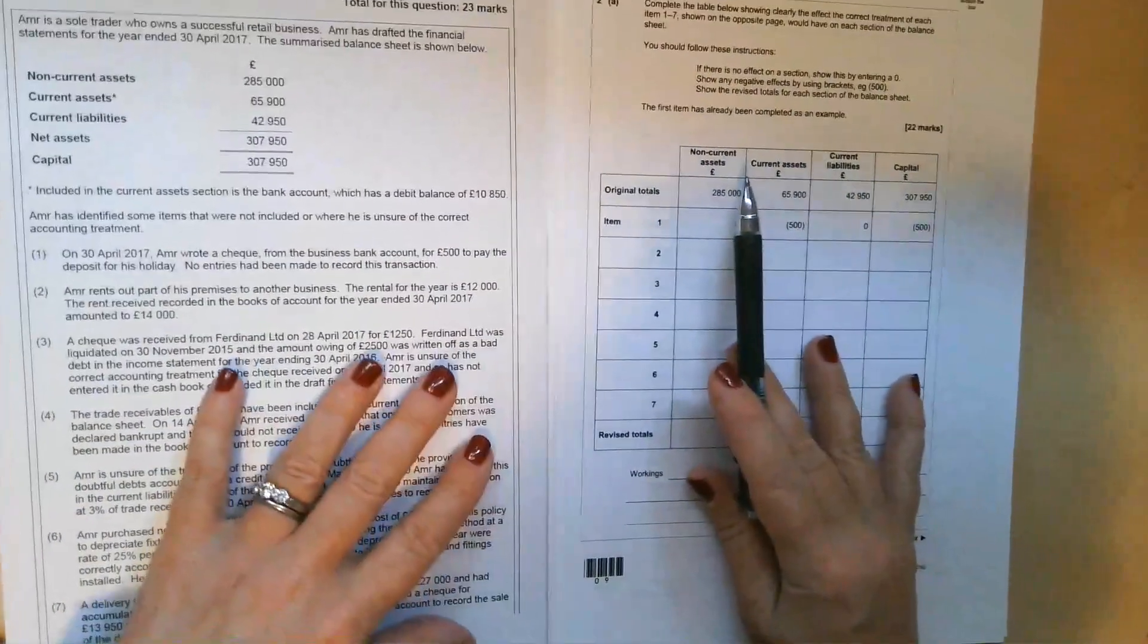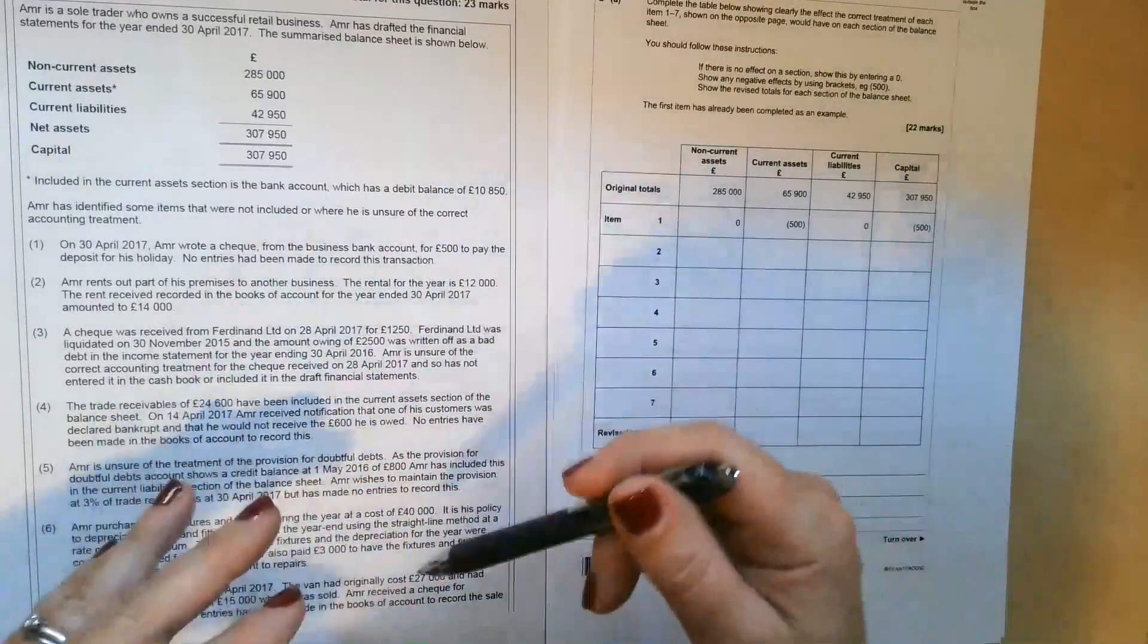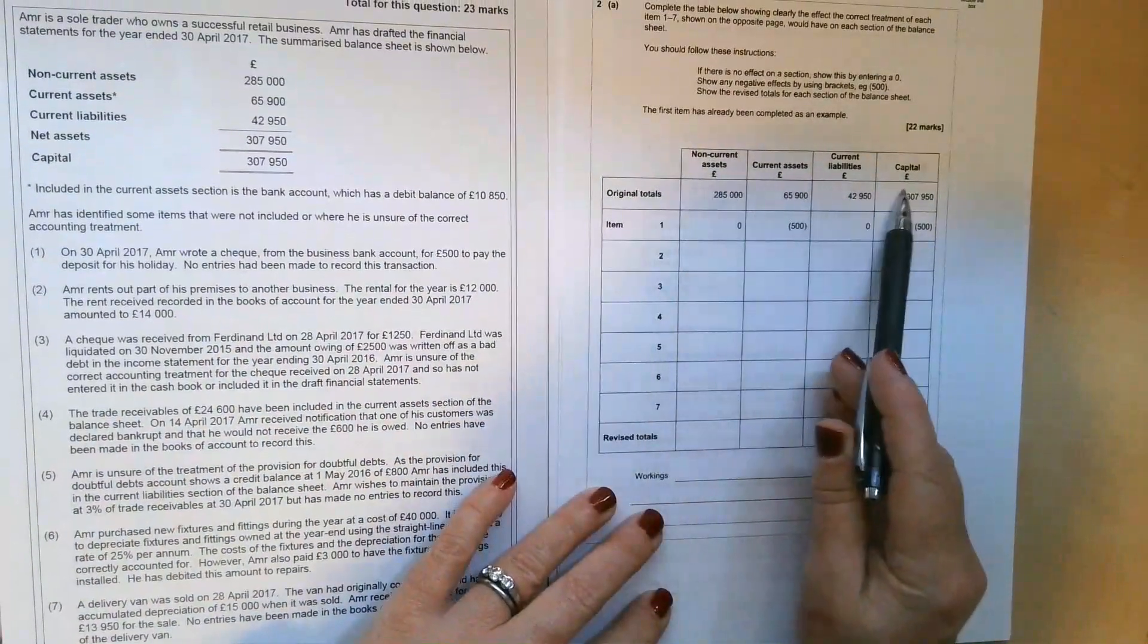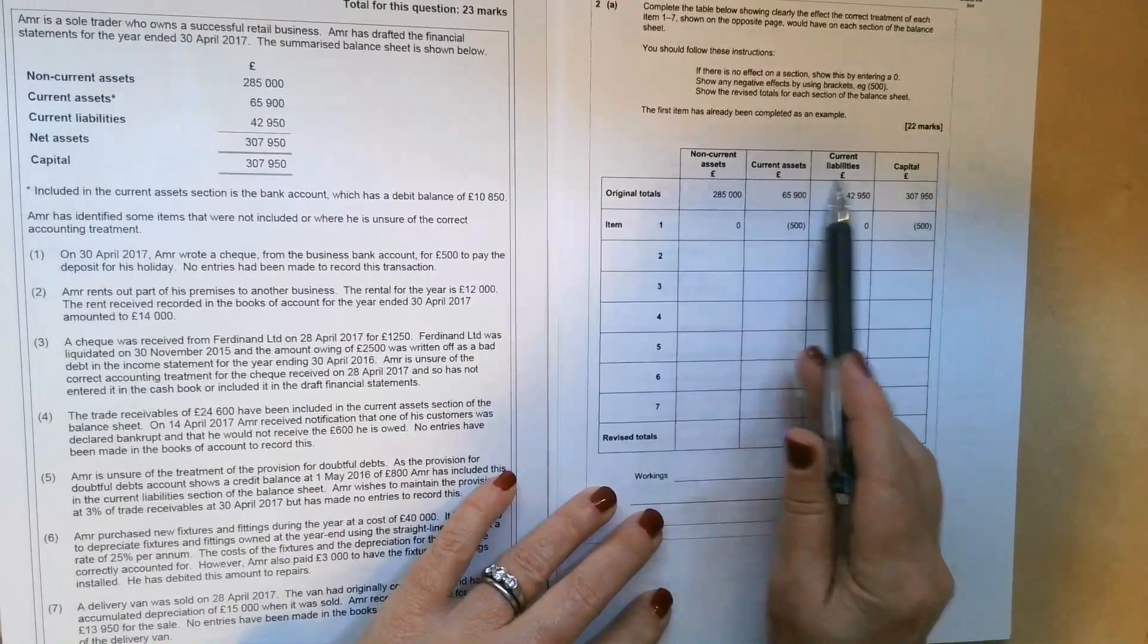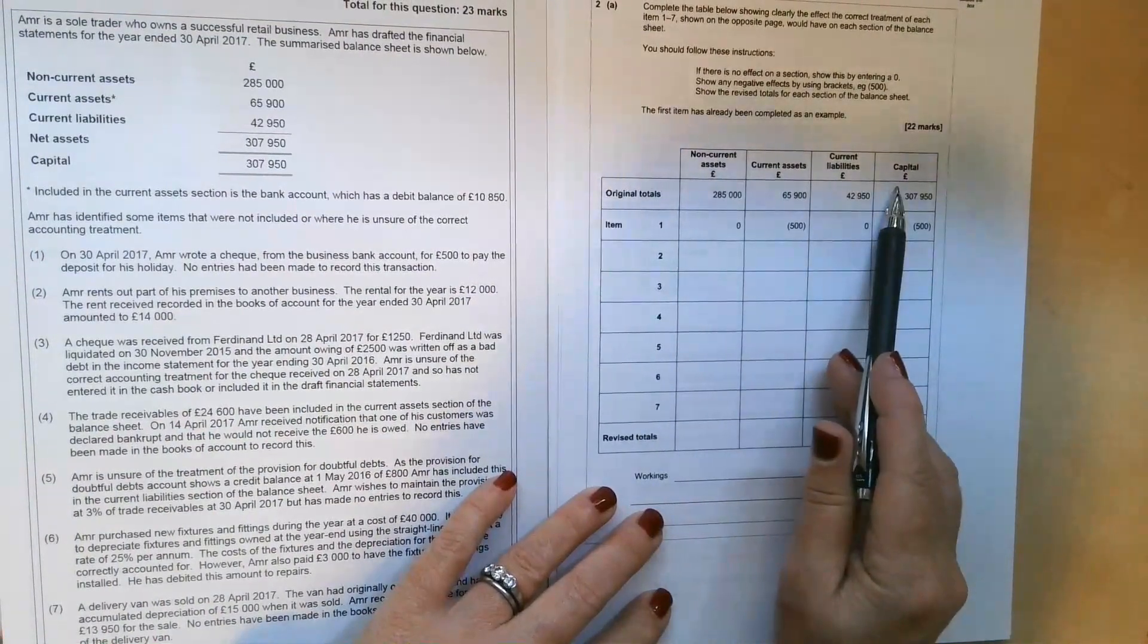Obviously thinking through the double entry and thinking through how each of these adjustments would affect the following categories: non-current assets, current assets, current liabilities, and capital.